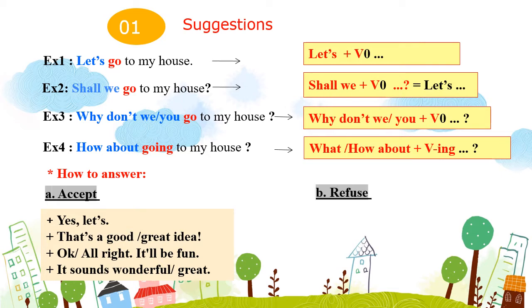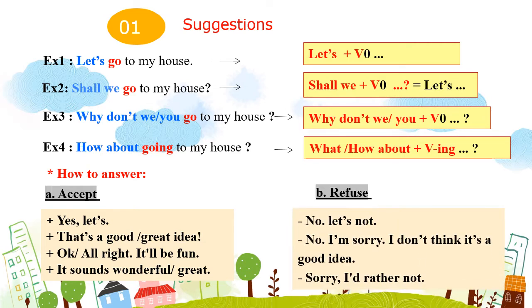Nếu chúng ta không đồng ý hay từ chối, thì chúng ta sẽ nói như sau: "No, let's not." "No, I'm sorry, I don't think it's a great idea" hoặc "I don't think it's a good idea." – Không, tôi xin lỗi, tôi không nghĩ đó là ý kiến hay. "Sorry, I'd rather not." – Xin lỗi, tôi không thích.